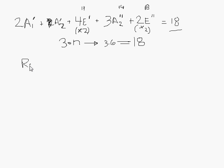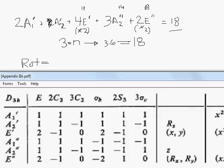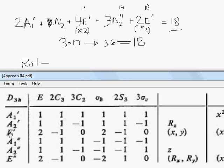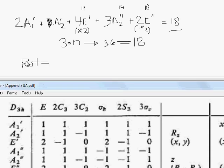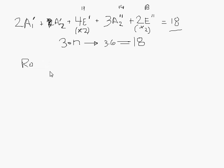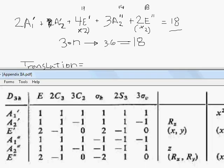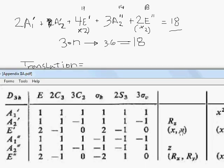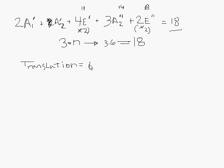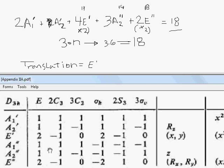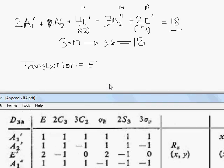Now let's subtract out the translational planes. We have to subtract out one e prime because we've got x and y in there and they transform together. For e prime we've got x and y transforming together, so we subtract out e prime once. Then we have z by itself and a2 double prime, so we subtract that out once.